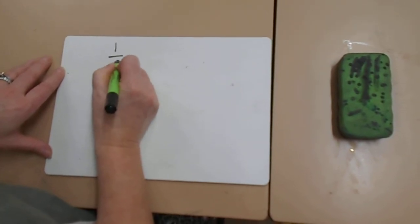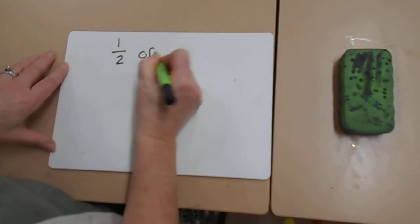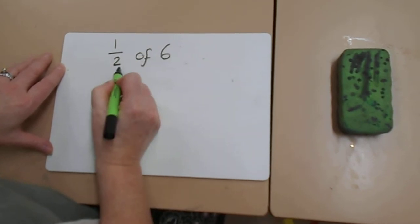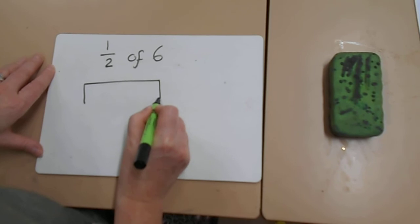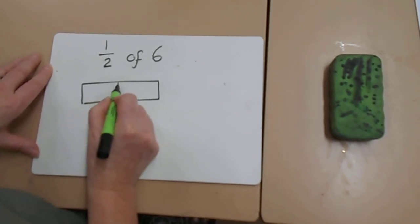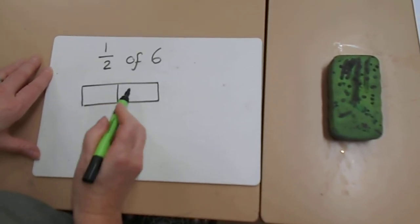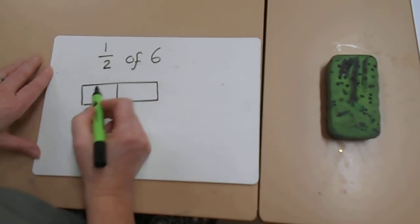So if I write the sum half of 6, with the half, the bottom number is 2. So that tells us how many to split our bar into. So we are splitting our bar into 2, so 1, 2 pieces, and then we are sharing 6.